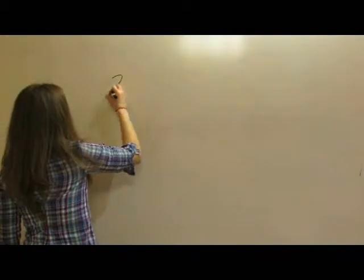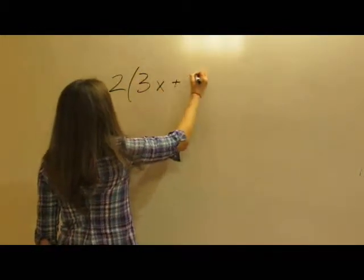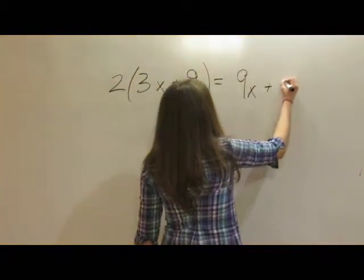Let's try 2 times 3x plus 9 equals 9x plus 3.